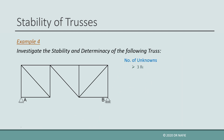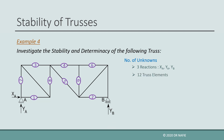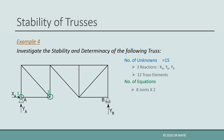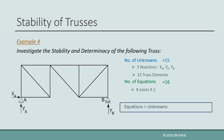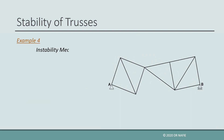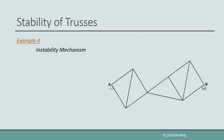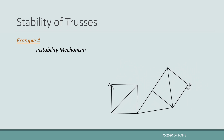For the fourth example, the number of unknowns is 15: three reactions and 12 truss elements. The number of equilibrium equations is 16 — eight joints multiplied by two equations per joint. Because the number of equilibrium equations is greater than the number of unknowns, the truss is unstable. The instability can be visualized by the failure mechanism generated due to a vertical force at the middle.